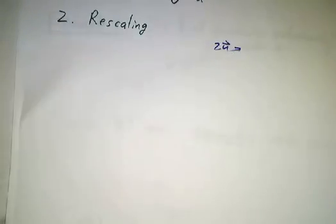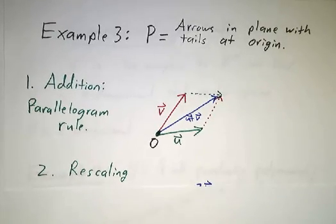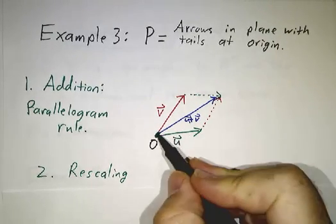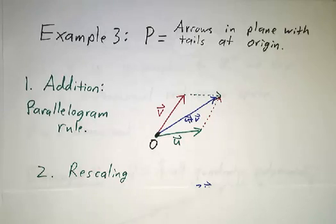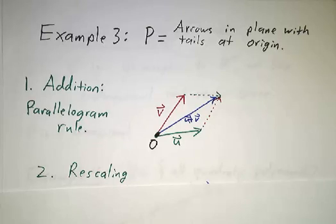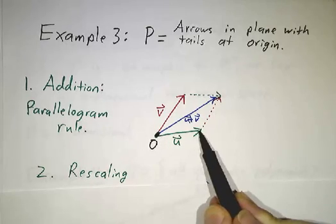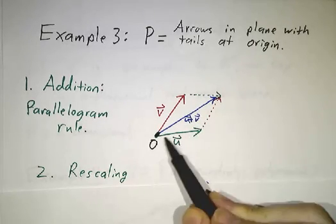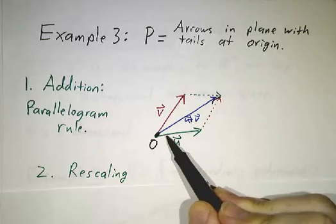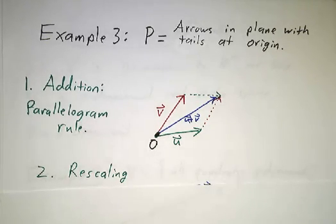Our next example is arrows in the plane. So let's suppose we have a blank sheet of paper. We've got a point that we're gonna call the origin, and we're just gonna consider all arrows whose tail is at the origin. And our rule for adding two arrows is the parallelogram law. If you call this u and call this v, you make it into a parallelogram, and the arrow that starts at the origin and goes to the opposite side, that's called u plus v.